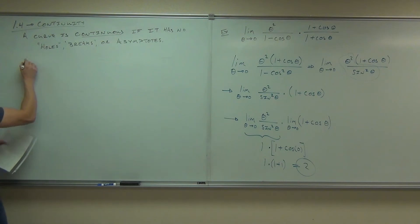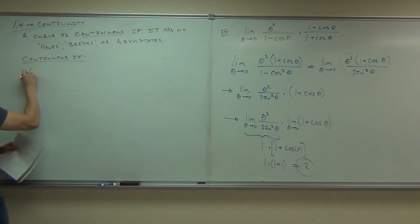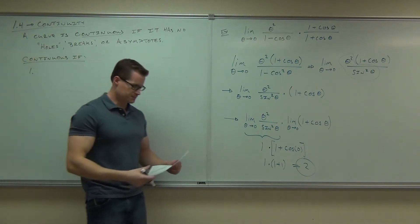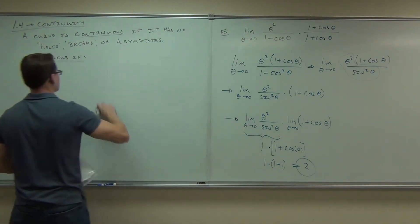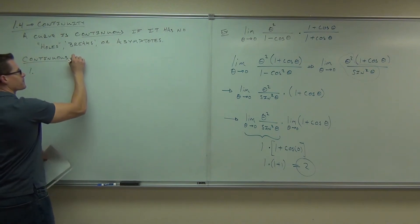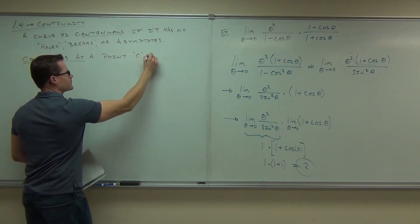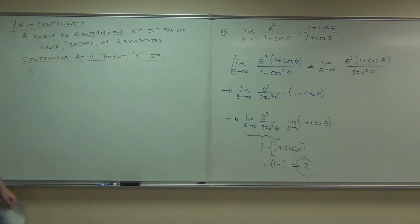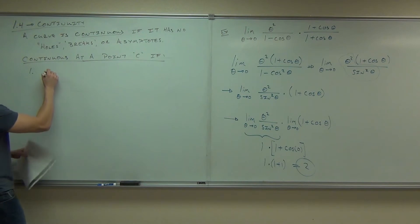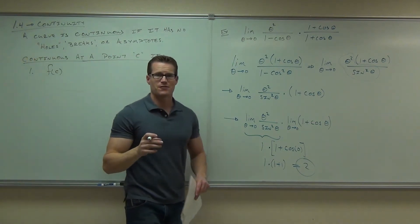Here's what continuity is mathematically. More specifically, a function is continuous — and let me say at a point — I need to add that on there, otherwise it's not going to make a lot of sense. So: continuous at a point C if three things happen.